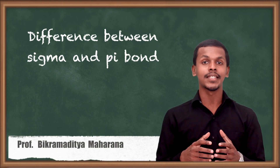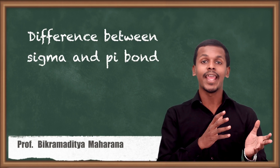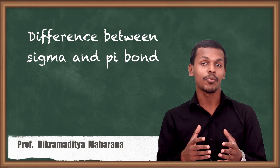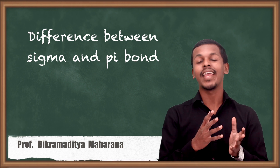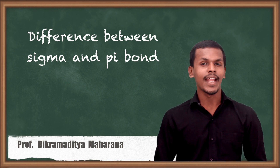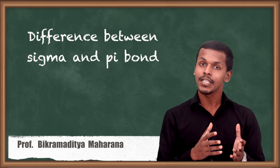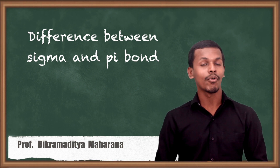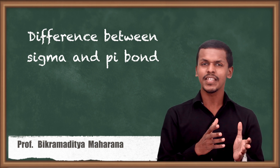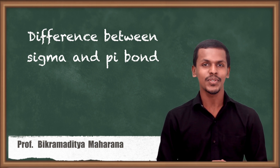In the previous section we learned how overlapping takes place between s orbitals, p orbitals, or between s and p orbitals. Depending on that, we are going to discuss how sigma bonds and pi bonds form. So what is a sigma bond and what is a pi bond? Let us talk about that in this section.